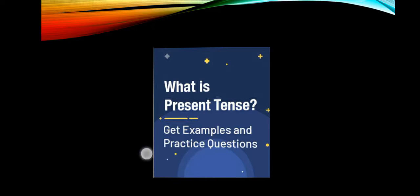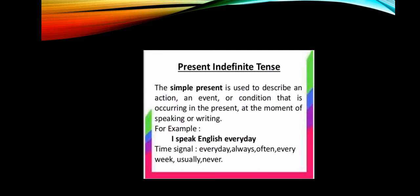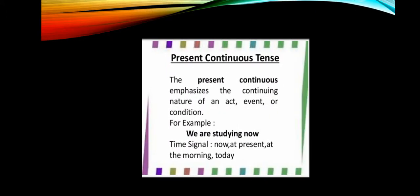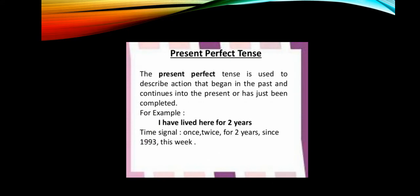Simple present tense is used to describe an action, event, or condition occurring in the present at the moment of speaking or writing. Present continuous tense is used to emphasize the continuing nature of an ongoing action at the time of speaking. Present perfect tense is used for just-completed actions — please go through the time signal keywords provided.